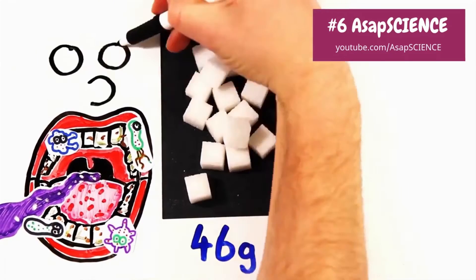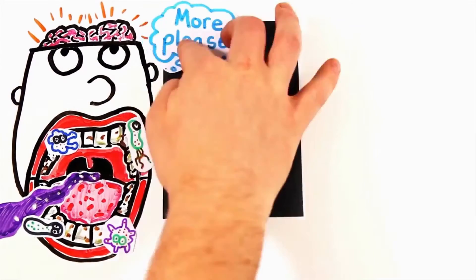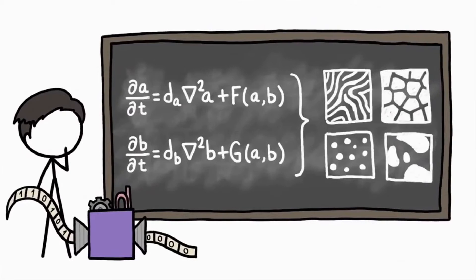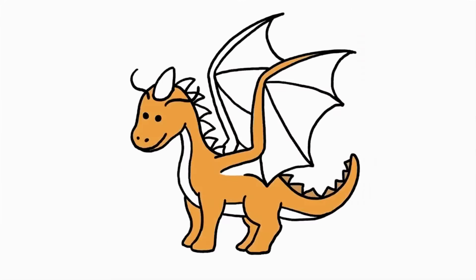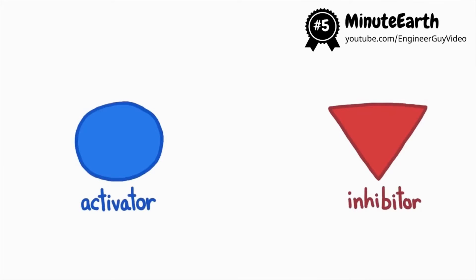The receptors on your tongue sense this and send a message to your cerebral cortex, activating the reward center of the brain, which says 'more please.' The rules go something like this: inside each theoretical organism there are two substances called an activator and an inhibitor.